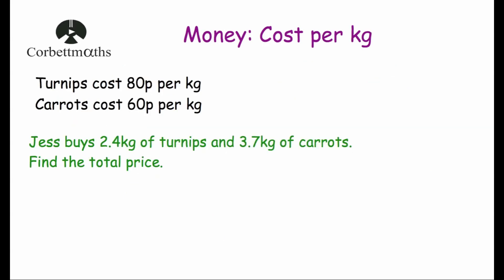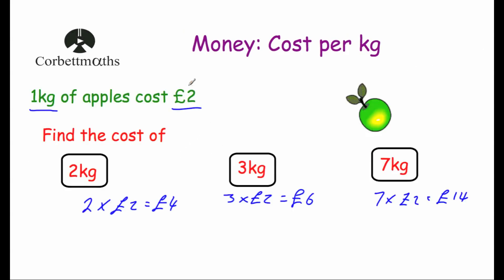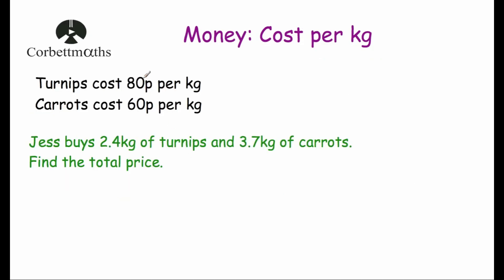Now let's look at a calculator question. Turnips cost 80 pence per kilogram and carrots cost 60 pence per kilogram. Jess buys 2.4 kilograms of turnips and 3.7 kilograms of carrots. To find the cost of turnips, we multiply 80 pence by 2.4, which gives 192 pence, or £1.92.